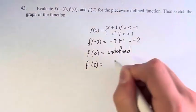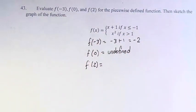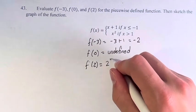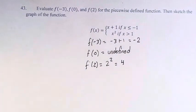Finally, f of 2. 2 is greater than 1, therefore we do x squared. 2 squared is equal to 4, so that's the value of the function.